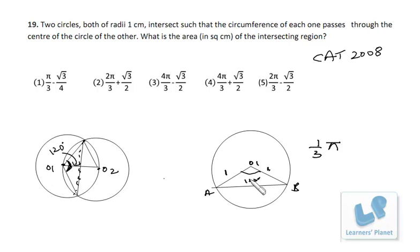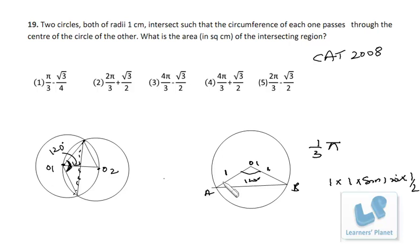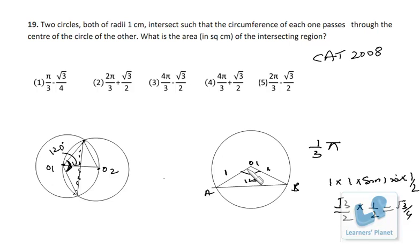The area of triangle OAB is calculated using the sine formula: half times side times side times sine of the included angle. That is half times 1 times 1 times sine(120°). Since sine(120°) equals √3/2, the area of the triangle equals 1/2 times √3/2, which gives √3/4.